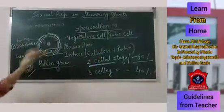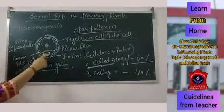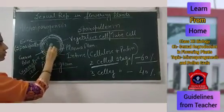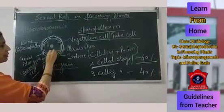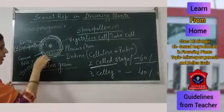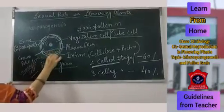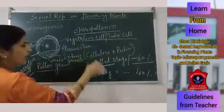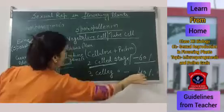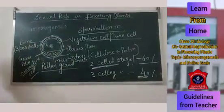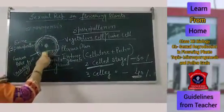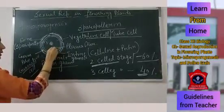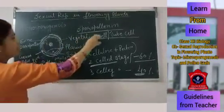In the remaining 40% of angiosperms, pollen grains are released at the 3-cell stage. In the 3-cell stage, the generative cell divides again to form 2 cells, and these 2 cells are known as male gametes. So 40% of angiosperms have 3 cells — the vegetative cell and two male gametes — while 60% have a small generative cell and a larger vegetative cell.